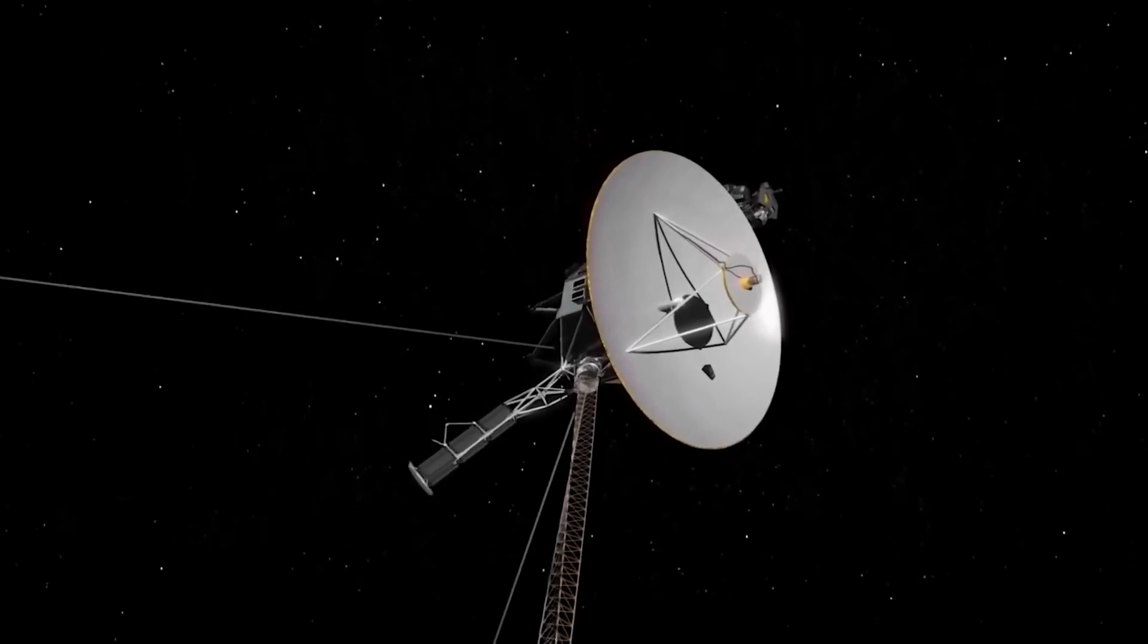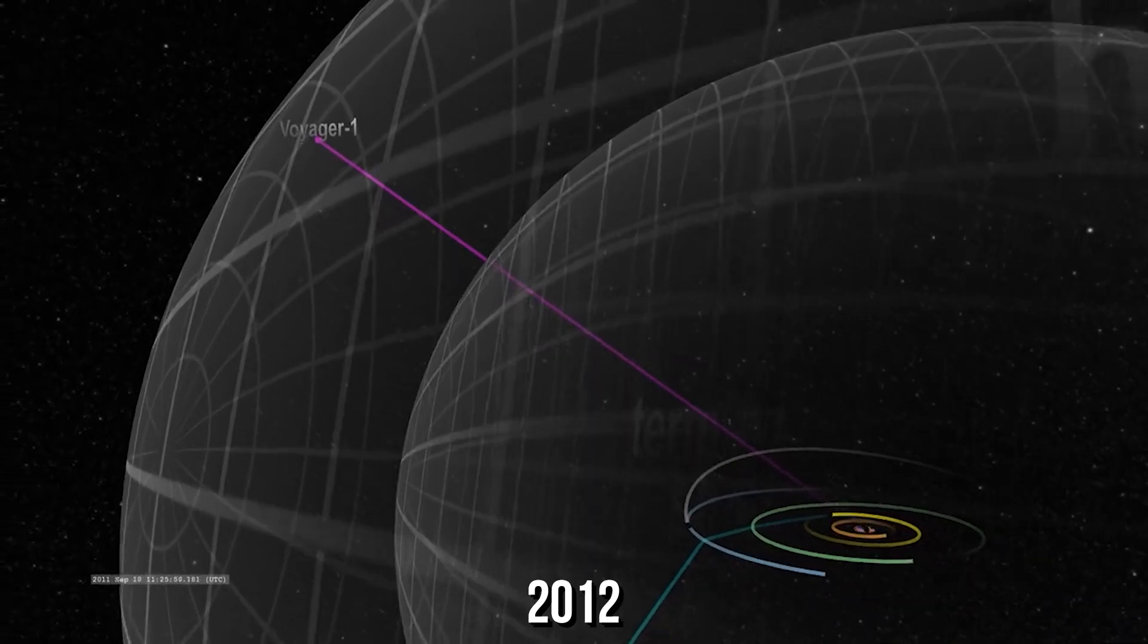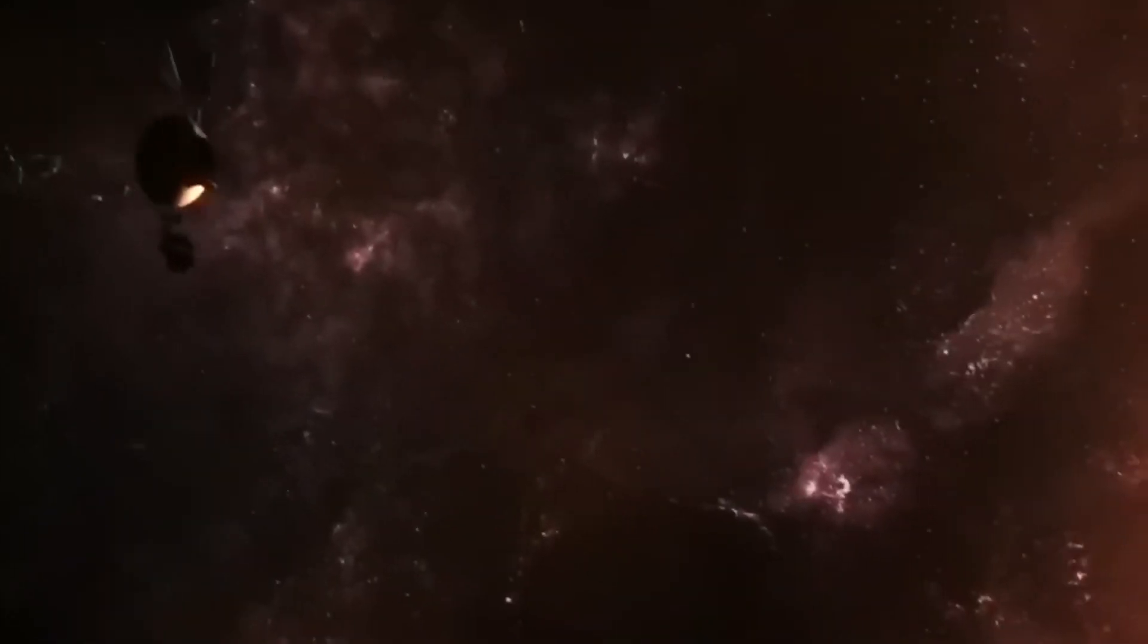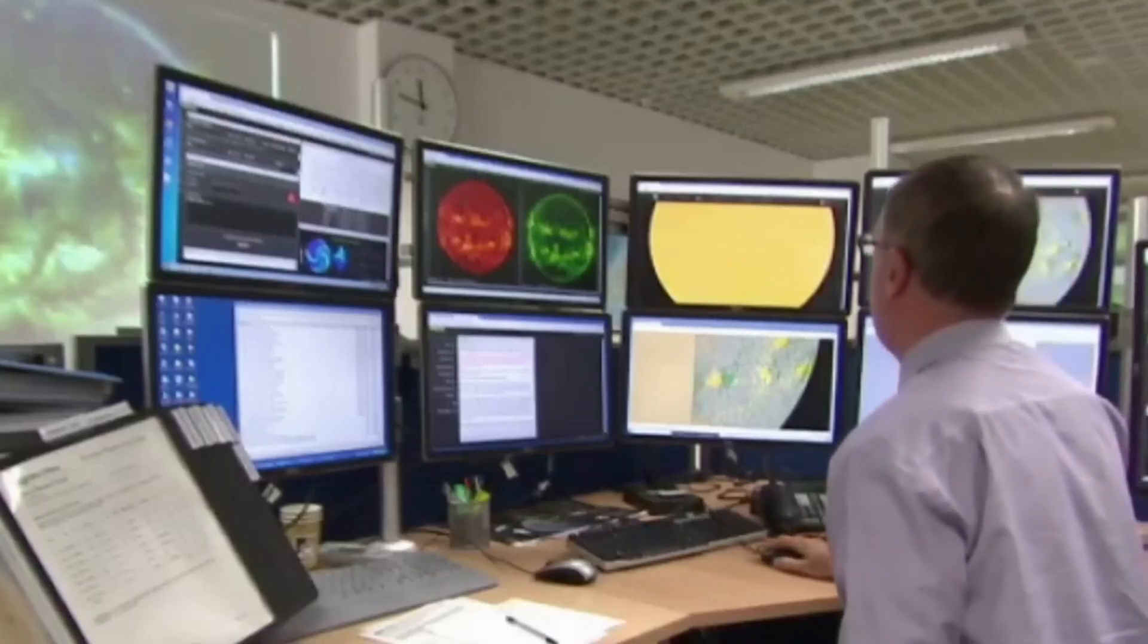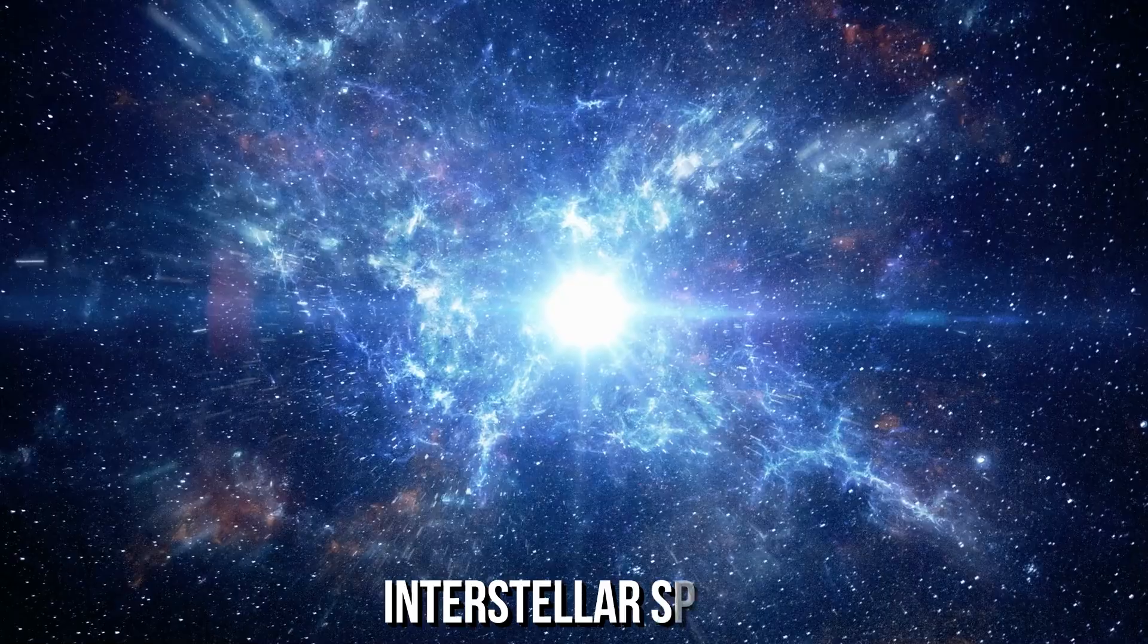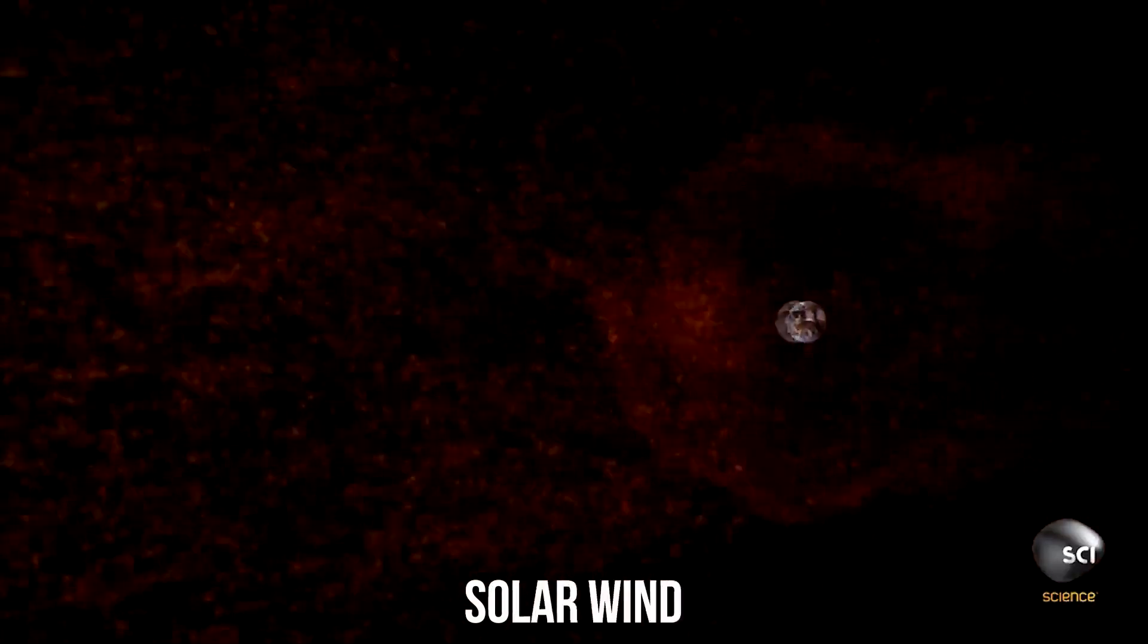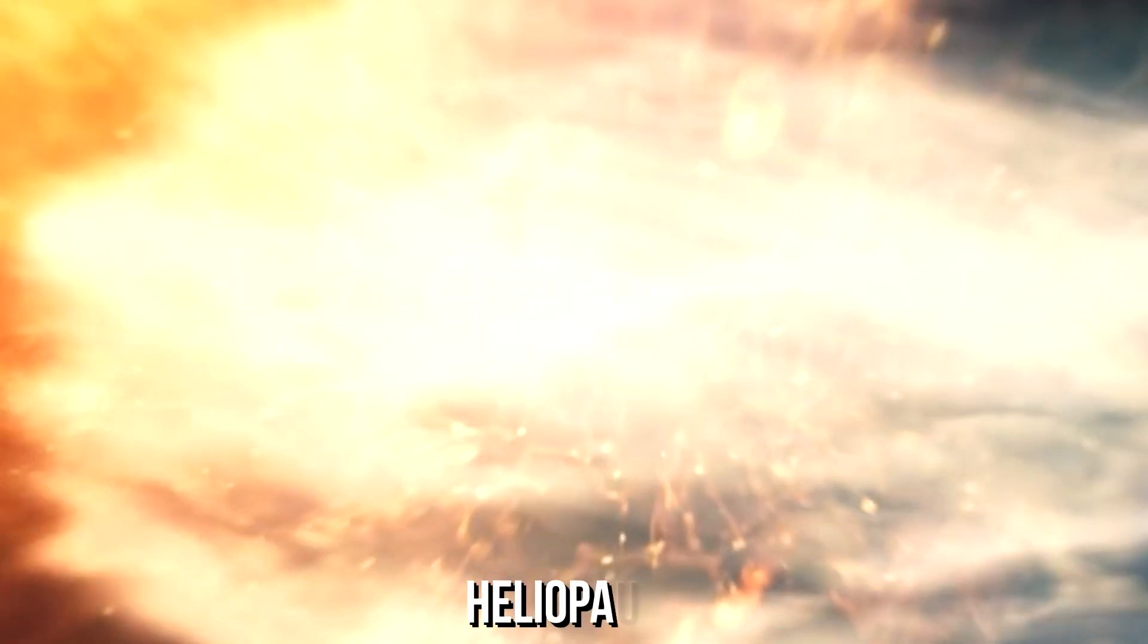Voyager 1 became the first human-made object to enter interstellar space in 2012, while Voyager 2 followed in 2018. As the Voyager spacecraft traveled deeper into space, they continued to send back valuable data about the Sun, interstellar space, and the heliosphere. They helped us to understand the structure and dynamics of the solar wind, the interaction between the solar wind and the interstellar medium, and the boundary of our solar system, the heliopause.